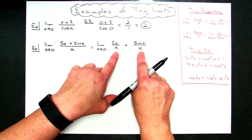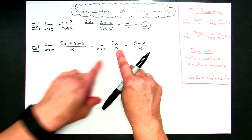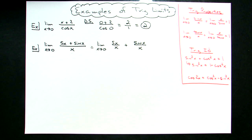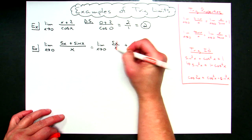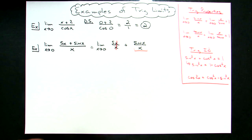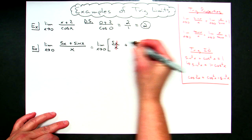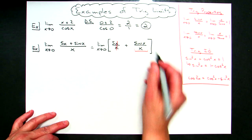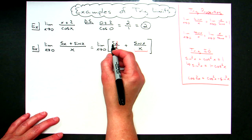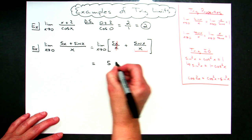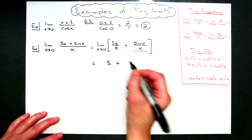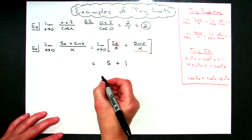Now I can algebraically cancel my x's in the first term, and sine x over x we know goes to 1. I'm taking the limit of this entire quantity, so the limit of a constant is just that constant. I'm going to have 5 plus — this is a known trig limit property — so I can put 1 right there. The overall limit is 6.